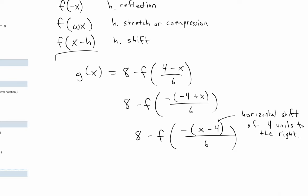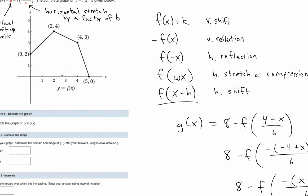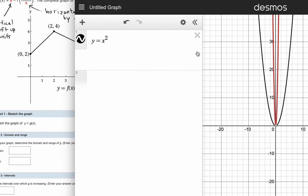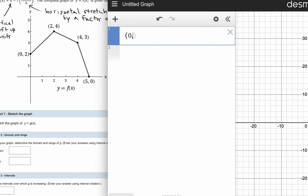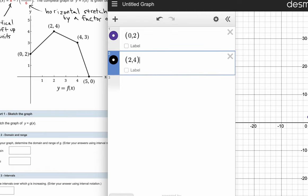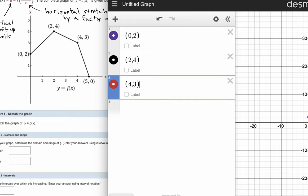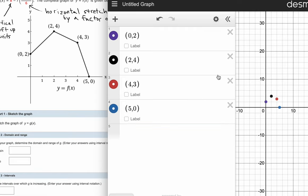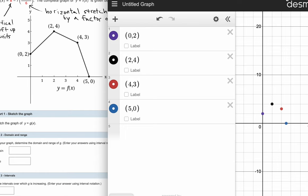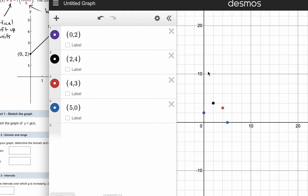Now we need to figure out in what order to transform the points of f of x in order to arrive at new points for g of x. Since f of x is a piecewise defined function with three different segments, I don't necessarily have to graph the entire function — I can just plot the key points of interest. If we can transform those points, we can come up with four new points that give us a good sense of what g of x looks like.